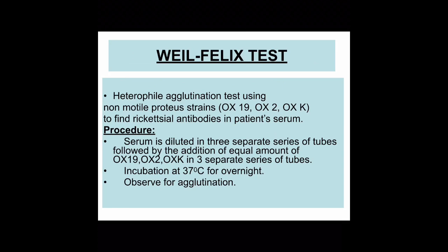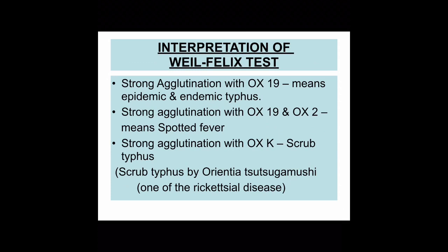OX19 and OX2 are strains of Proteus vulgaris. OXK is the strain of Proteus mirabilis. To interpret results: strong agglutination with OX19 indicates a positive result for epidemic and endemic typhus; strong agglutination with OX19 and OX2 indicates a spotted fever infection; and strong agglutination with OXK indicates scrub typhus infection caused by Orientia tsutsugamushi, which is one of the rickettsial diseases.